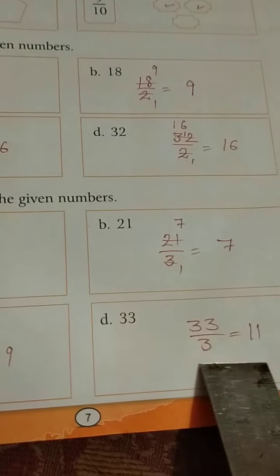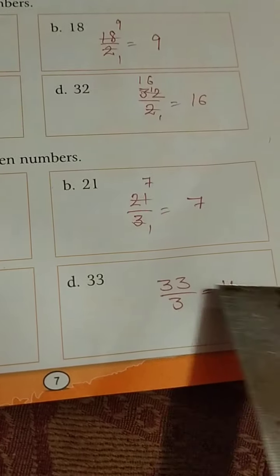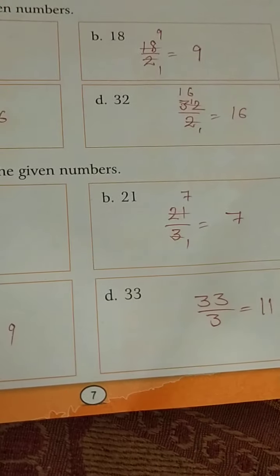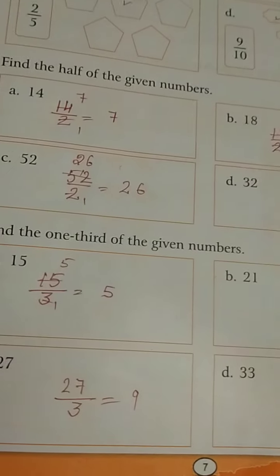33 by 3 means 3 1s are 3 and 3 11s are 33 means 11 multiply by 3, we are getting 33. So 1 3rd of 33 will be 11. Got it, so practice all these questions yourself.